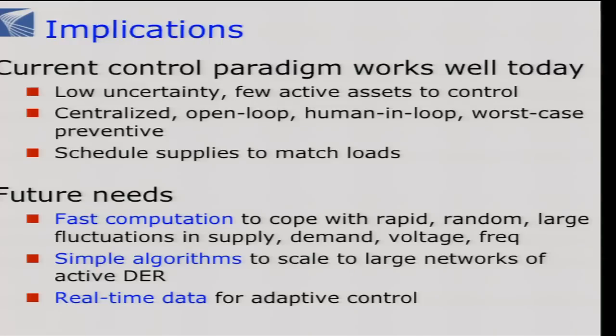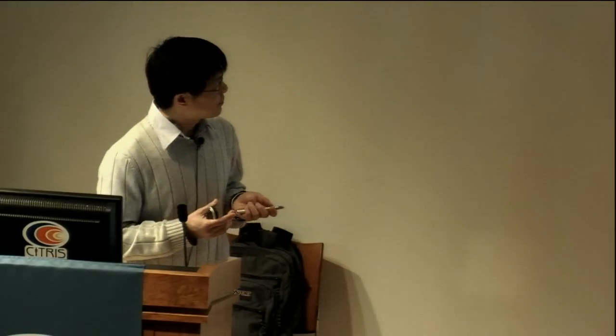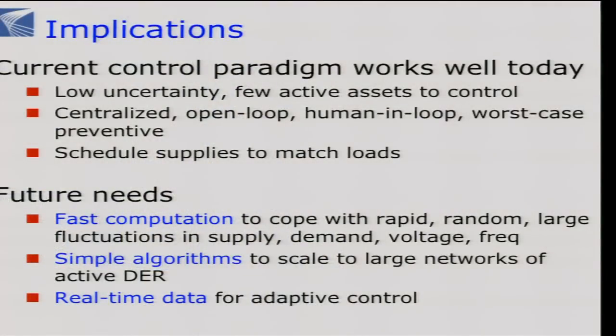The current control paradigm is mainly centralized, open loop, very much human-in-the-loop as you look at ISOs, and worst-case preventive. This works fine because we don't have a lot of uncertainty and have few active assets — say 9,000 generators. But in the future, when we have a lot of DERs — electric vehicles, wind turbines, solar panels, smart appliances, demand response loads — we could have hundreds of millions of endpoints that are active. They're not just passive loads, but active endpoints that can generate, measure, communicate, compute, and actuate.